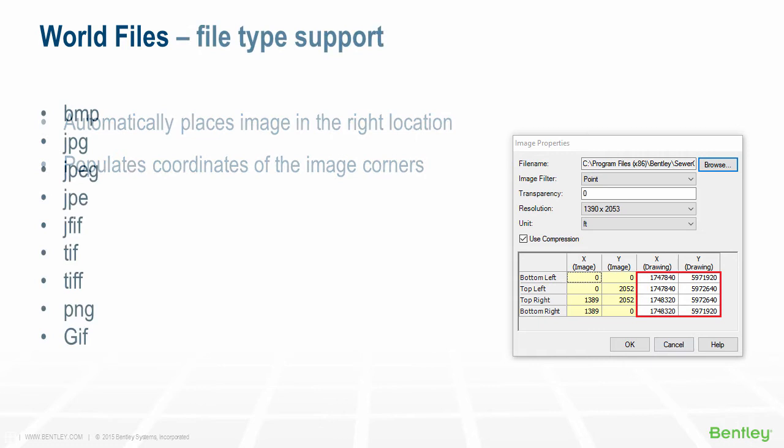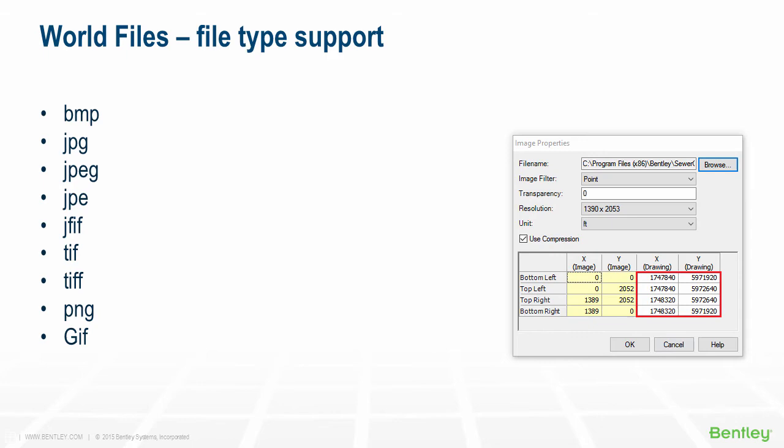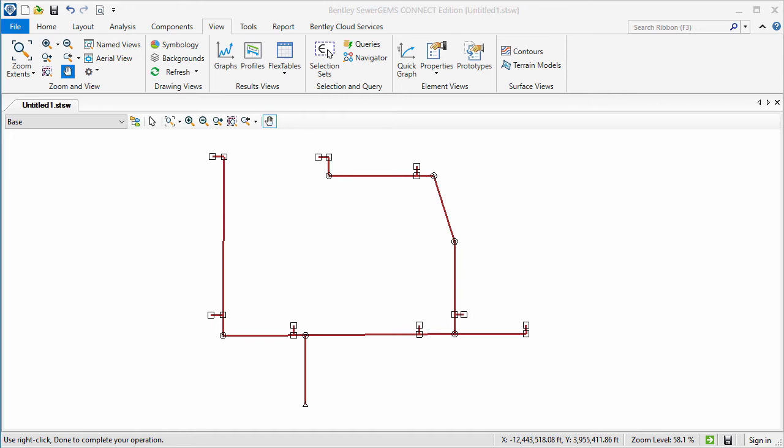I'm going to show how this new feature will save you time and improve accuracy by automatically aligning the background image with the model's plan view. Here I have a model which was imported from GIS. I have an image with an associated world file from the same coordinate system as the model.